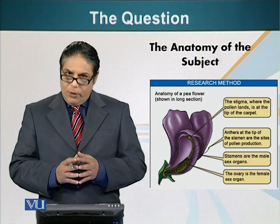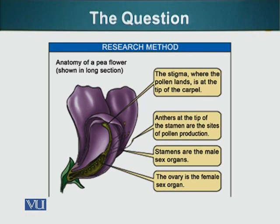Flowers are the reproductive organs of these plants. As you know, most flowers have both male and female reproductive organs. The ovary is the female sex organ, as you can see on your screen. The stigma is the part of the flower where the pollen lands and extends the tube. Pollen is the sperm equivalent of plants. Anthers are the male sex organs, attached to stamens which are filamentous structures. Anthers produce pollen, which can then land on the stigma and fertilize the egg inside the ovary.